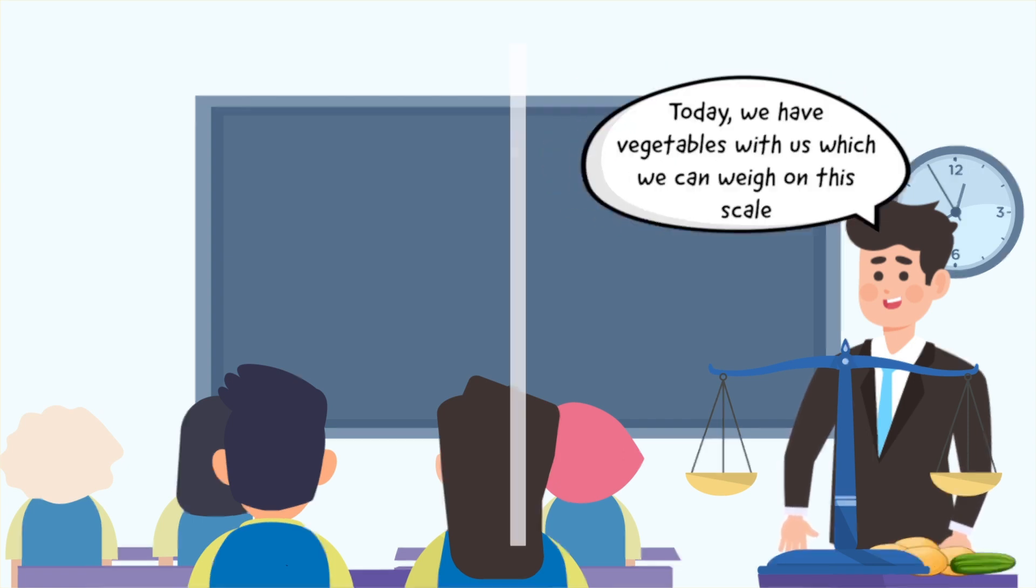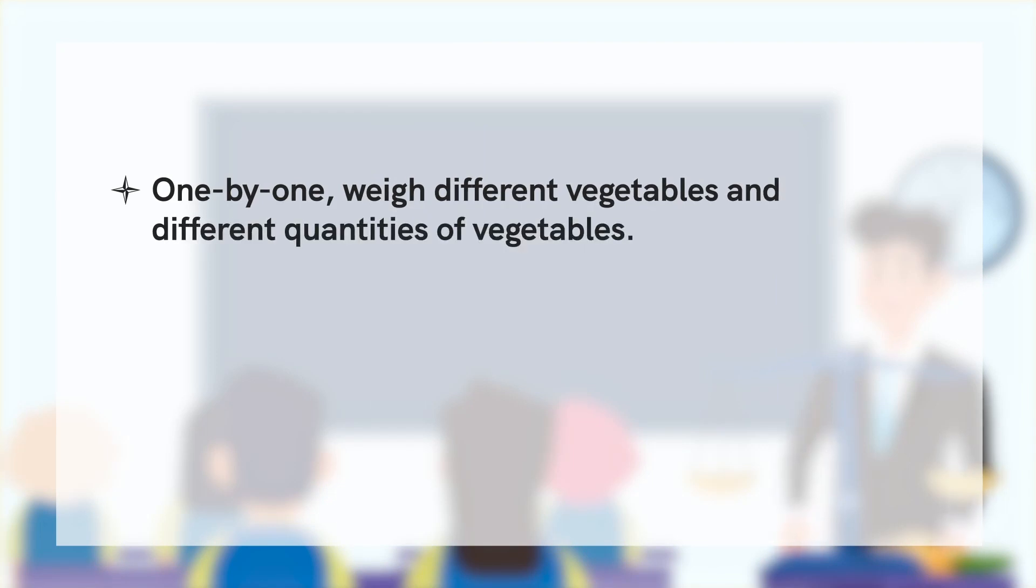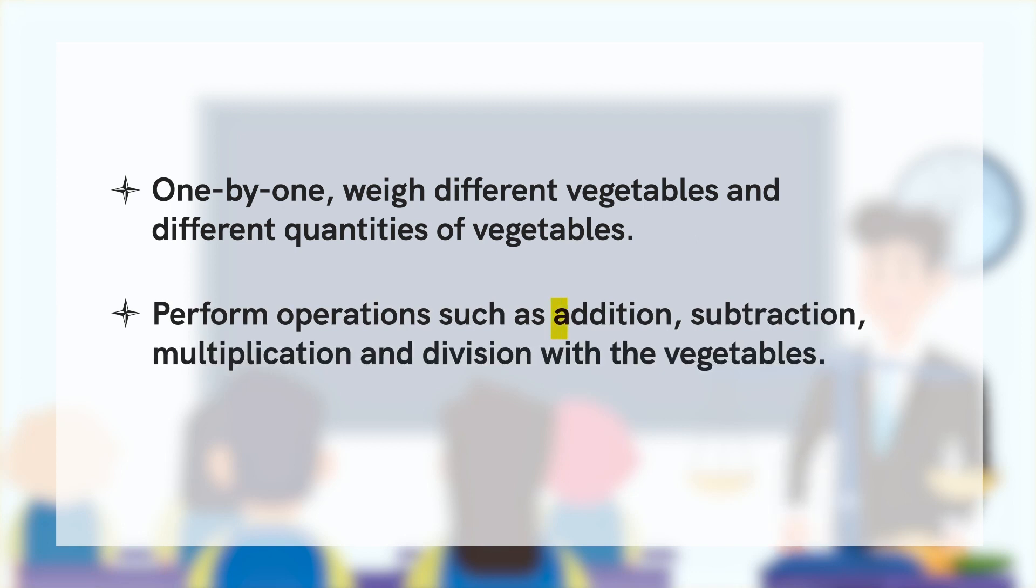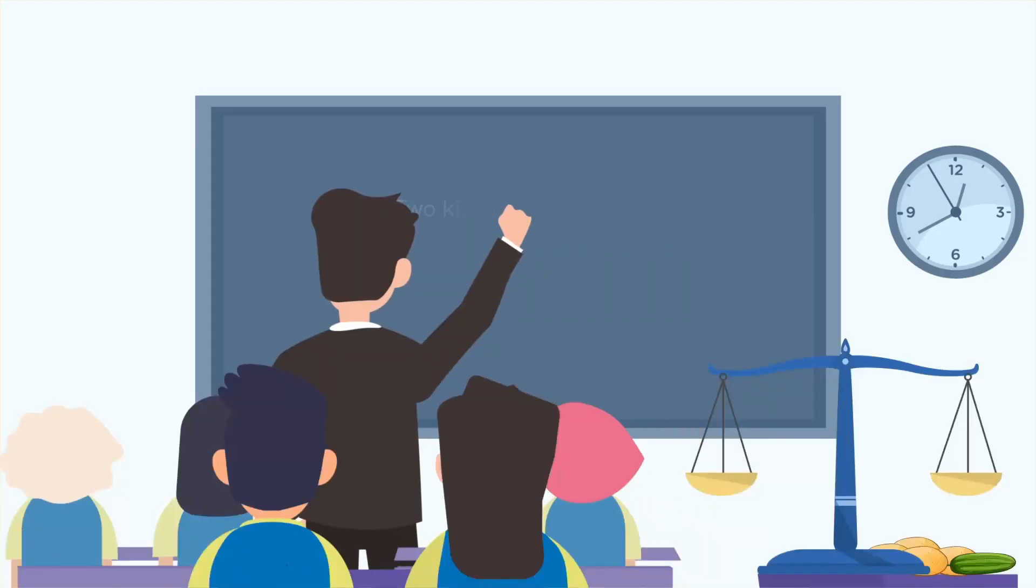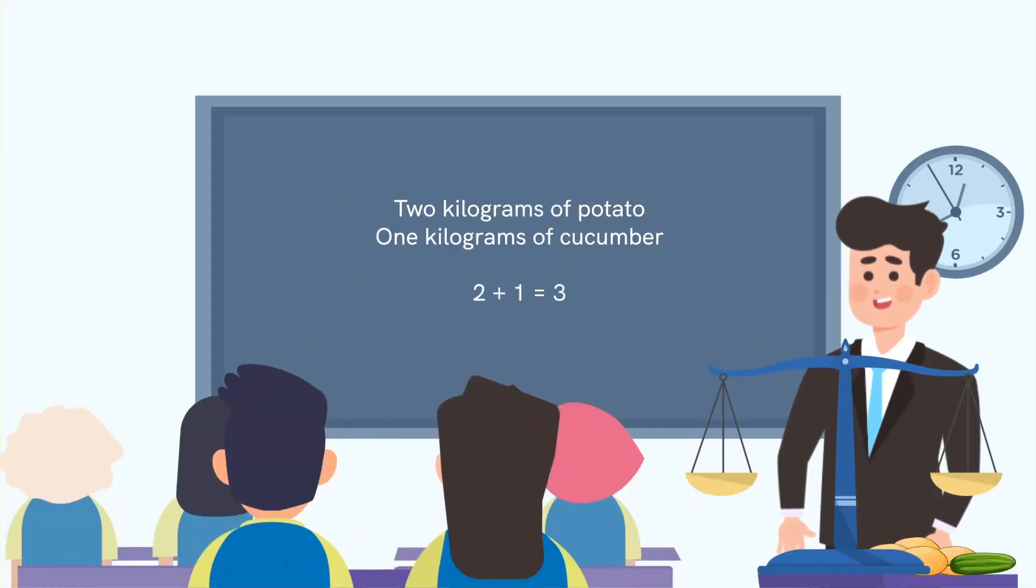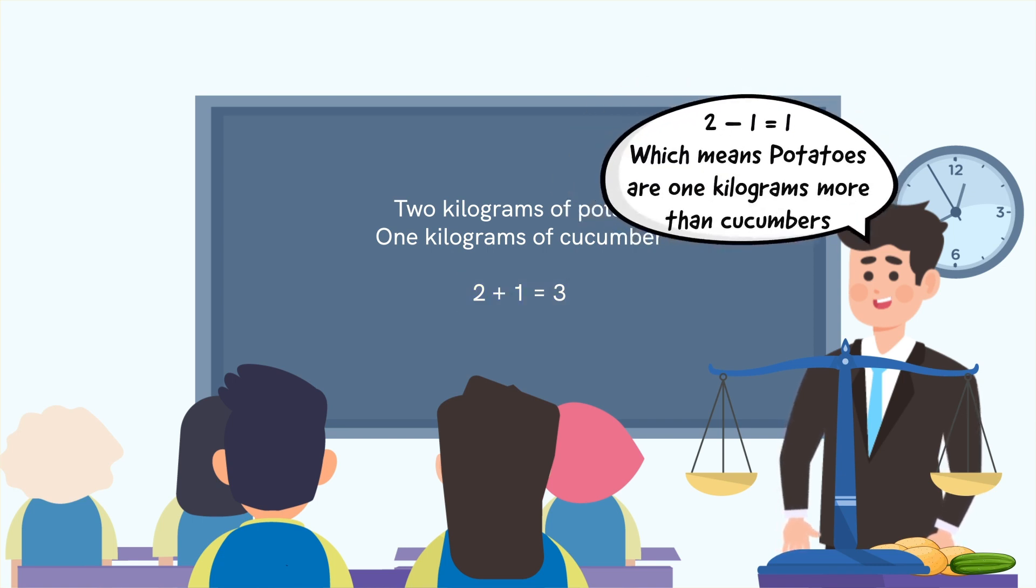Weigh different vegetables and different quantities of vegetables. Perform operations such as addition, subtraction, multiplication and division with the vegetables. Write down the solutions on the blackboard. For example, if there are two kilograms of potatoes and one kilogram of cucumber, write 2 + 1 = 3.